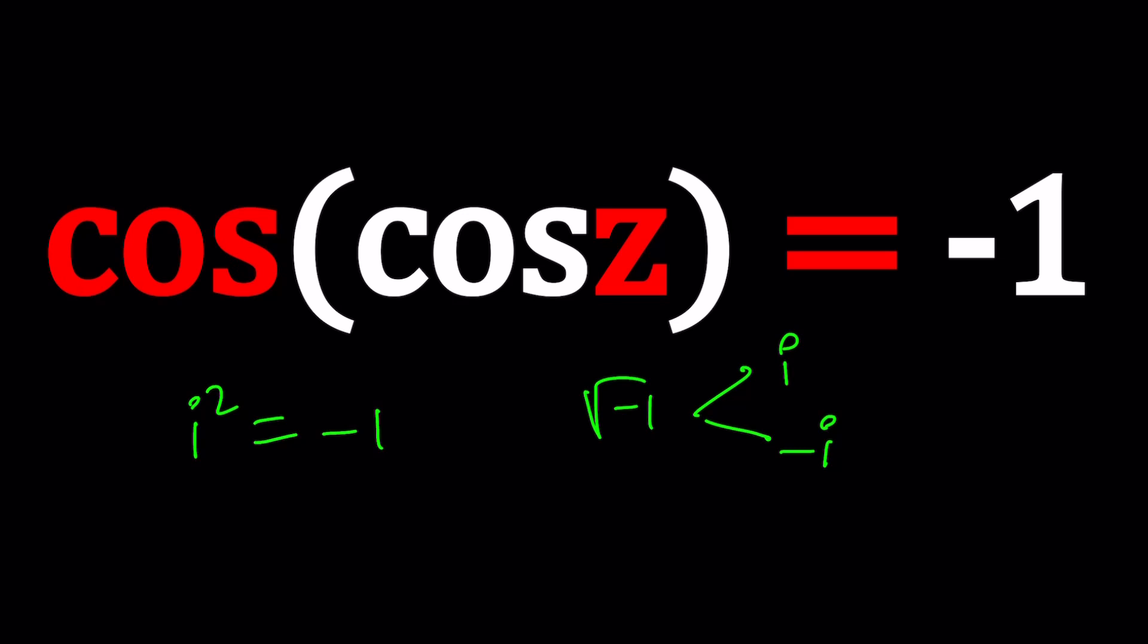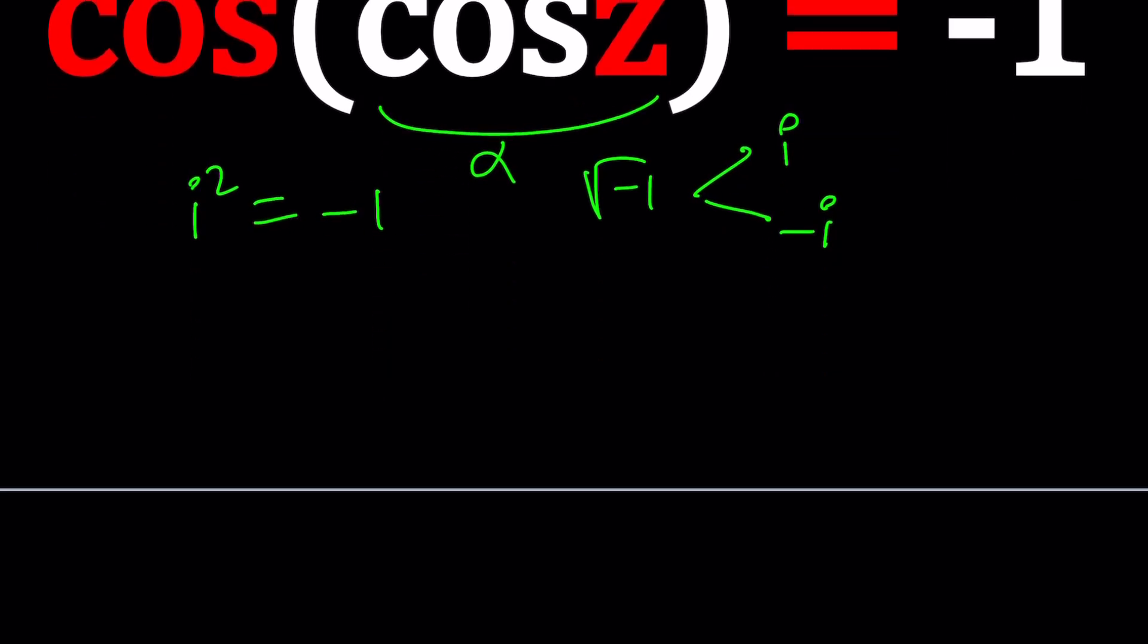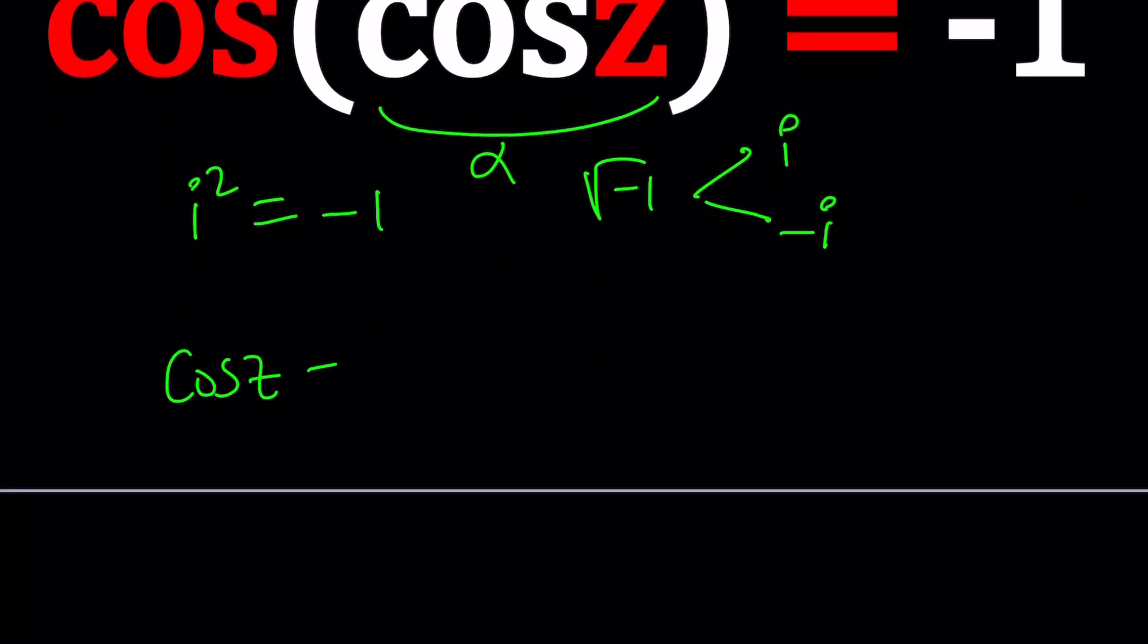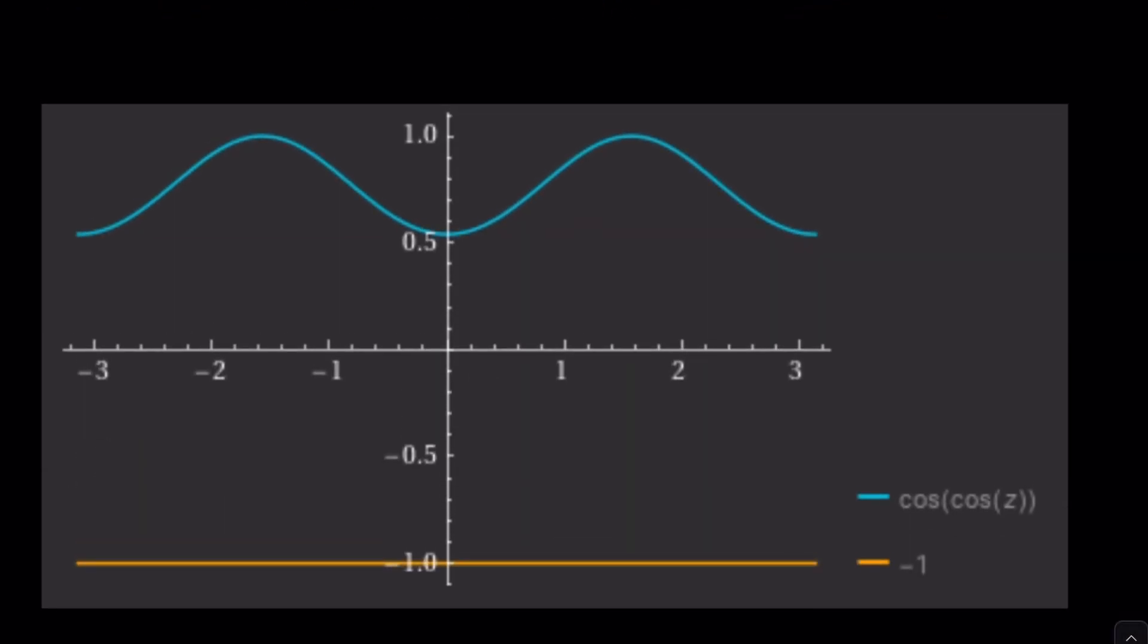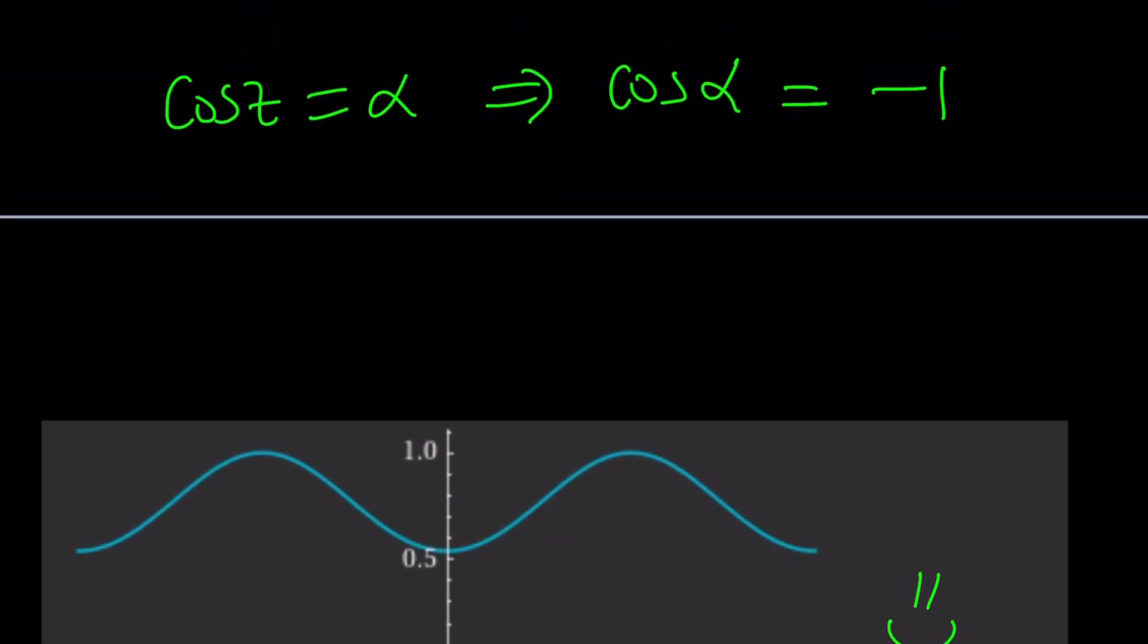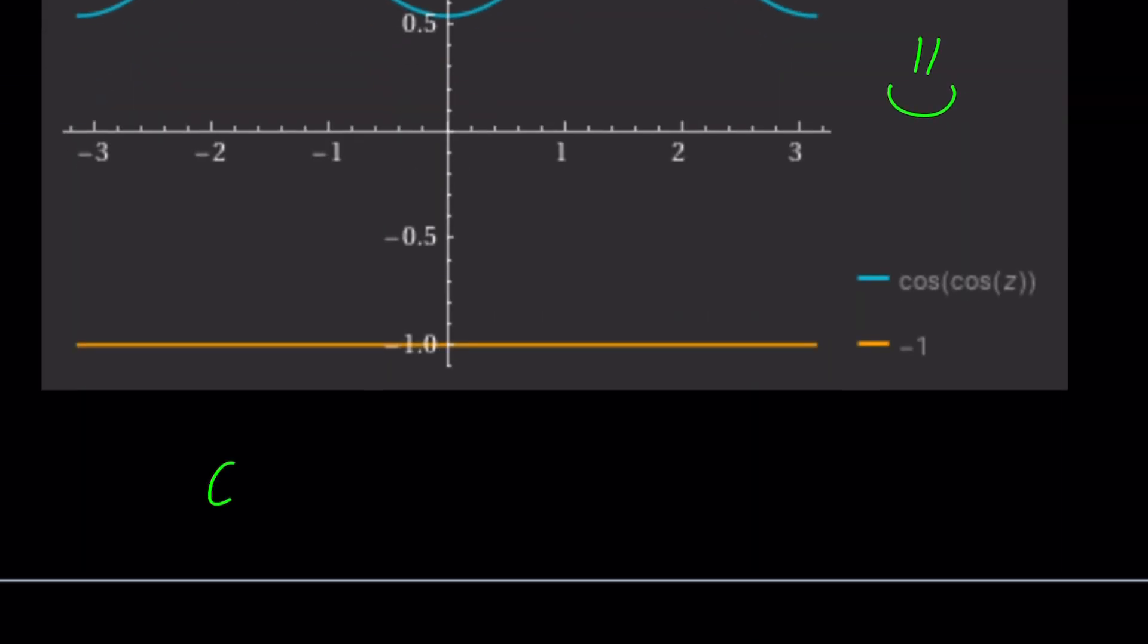Obviously, cosine alpha equals negative 1 can be solved. So let's start with that. Cosine Z, set it equal to alpha so we can solve an easier equation: cosine alpha equals negative 1. Before we get into the solution, I want to show you a graph of this function along with the horizontal line. They do not intersect. What is that supposed to mean? That means that Z values are not real.